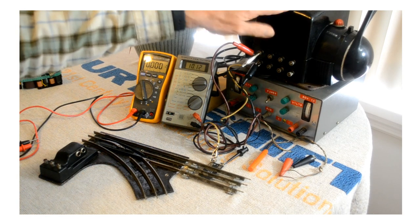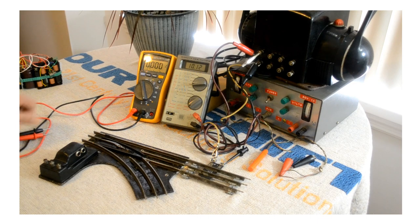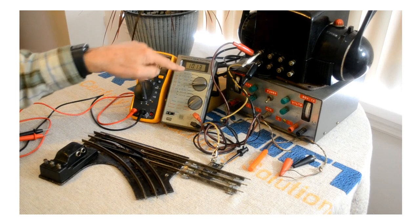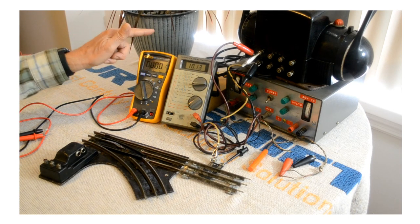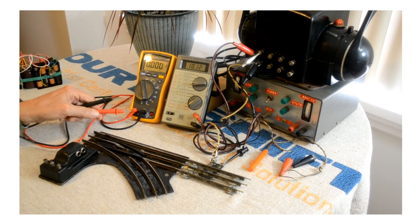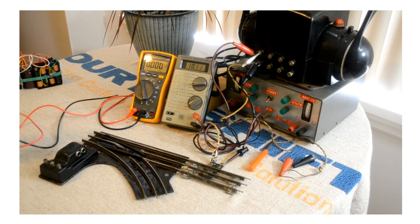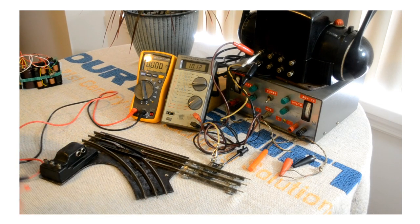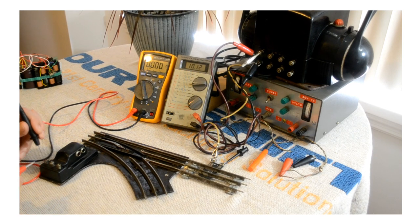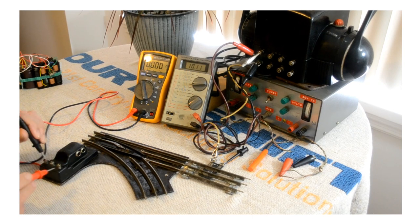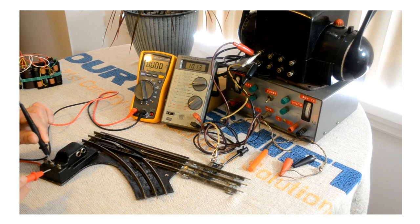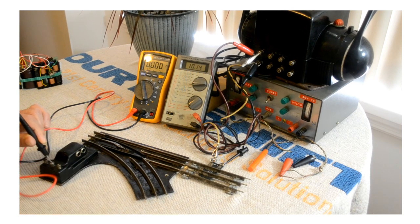I have my ZW transformer turned on right now, and I have an AC voltmeter measuring the output of the ZW. Right now it's 10.1. And this meter here is set up to measure AC amps. You can see I have the red probe connected that way and it's set up for AC amps. I've hooked up the ZW to the switch through a half track.